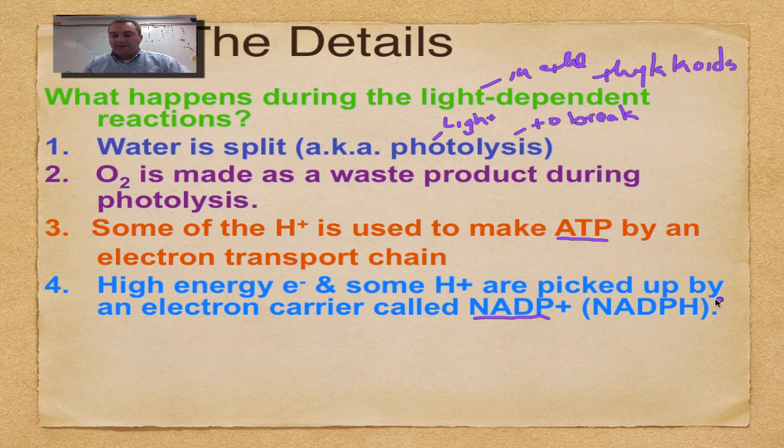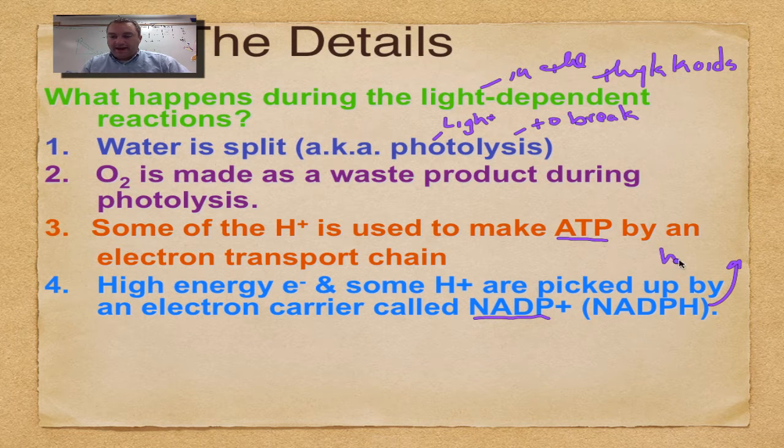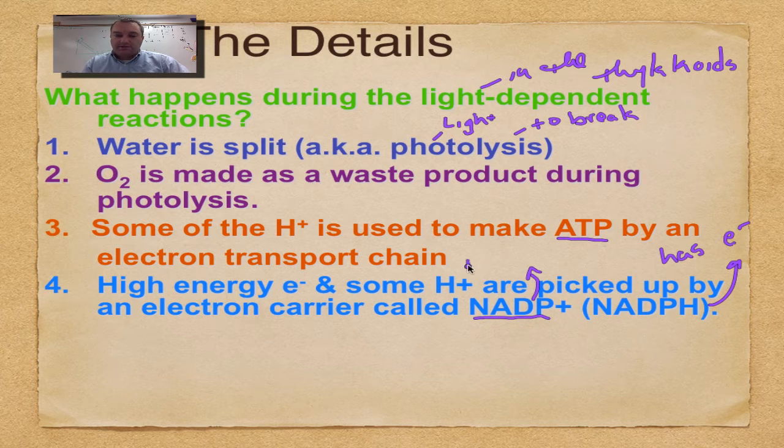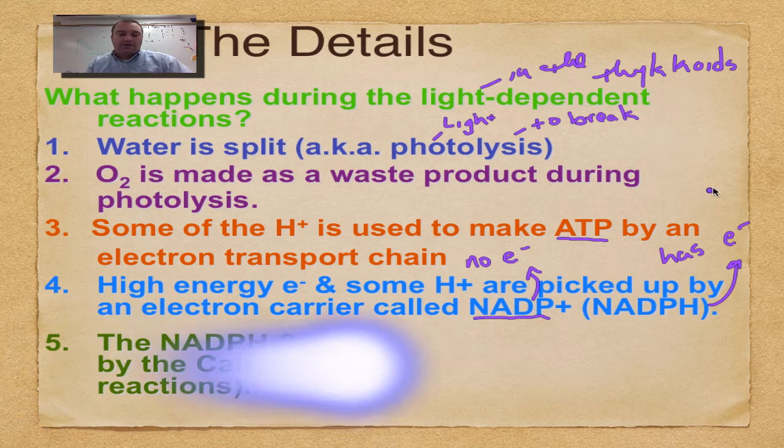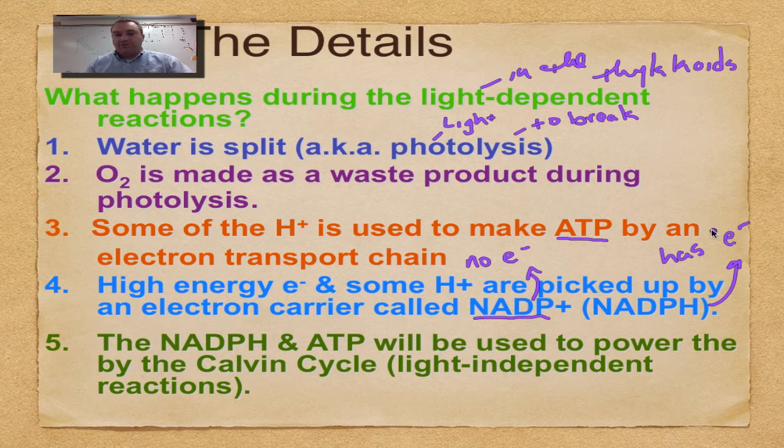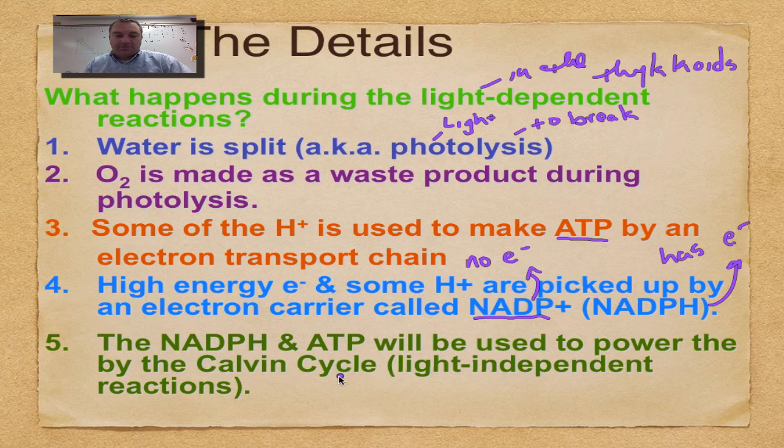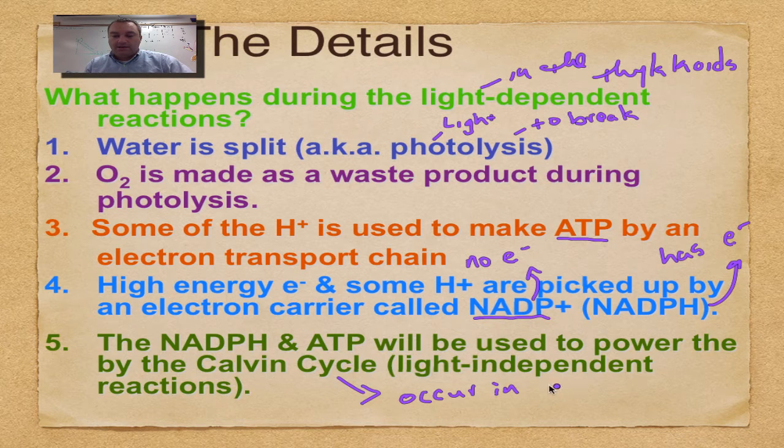NADPH means it has the electron on it; NADP+ means no electron. Think of it as an empty truck versus a truck with a full load. The NADPH and ATP move on to the next part of photosynthesis, called the Calvin cycle, sometimes referred to as the light-independent reactions. The Calvin cycle occurs in the stroma, which is the fluid outside of the thylakoids.